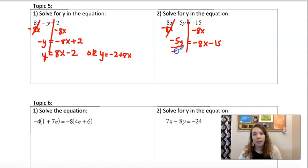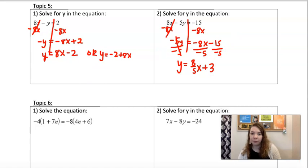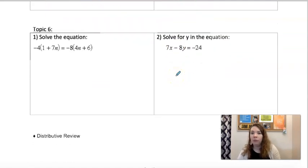And then divide everything by negative 5. All three pieces. So this will be y equals positive 8/5 x, because 2 negatives make a positive. Plus 3. Again, 2 negatives make a positive.